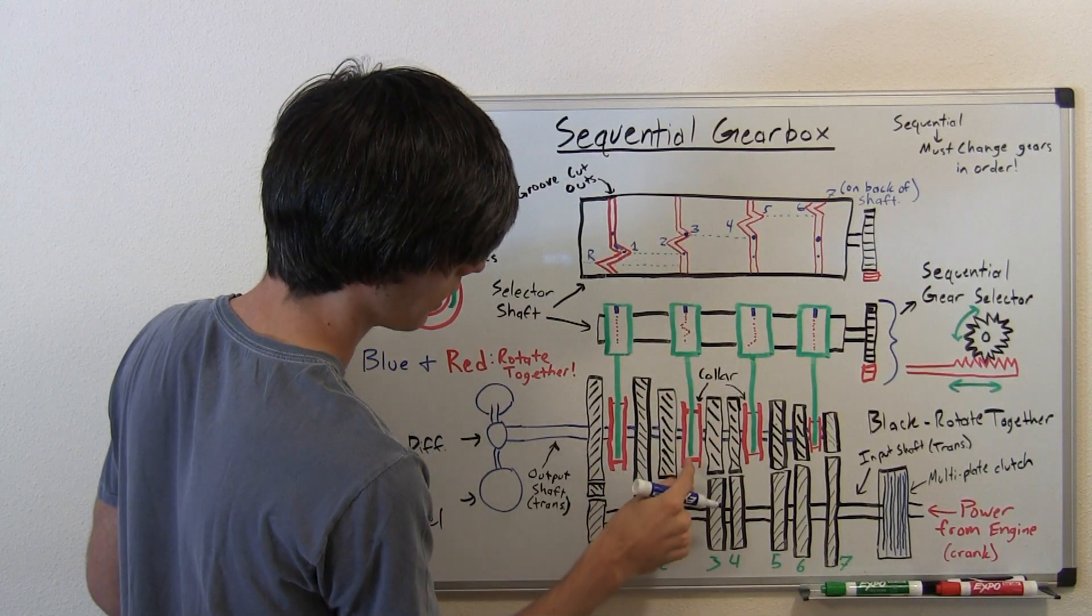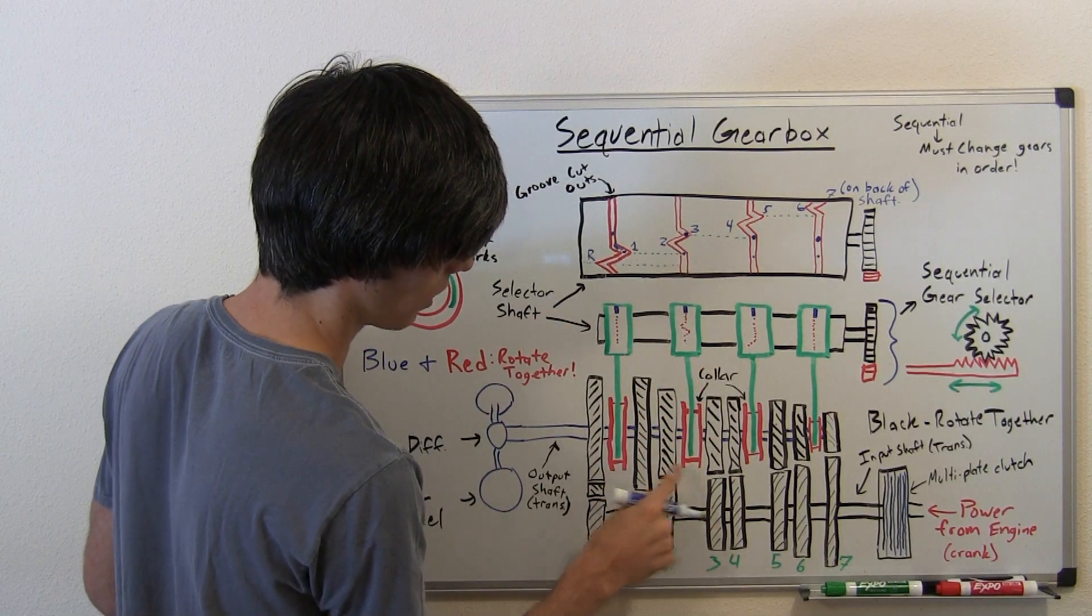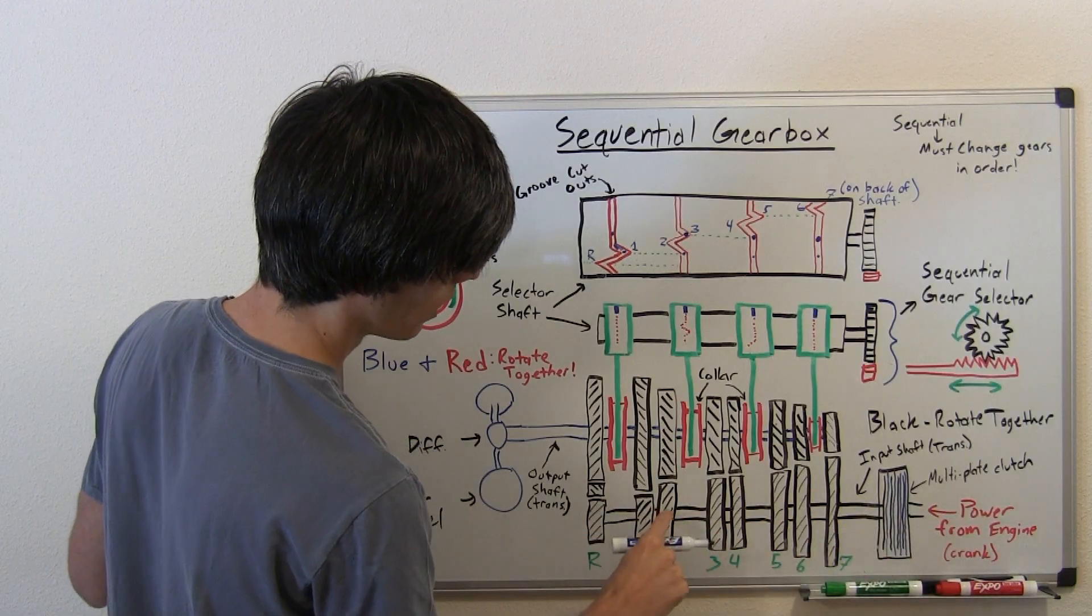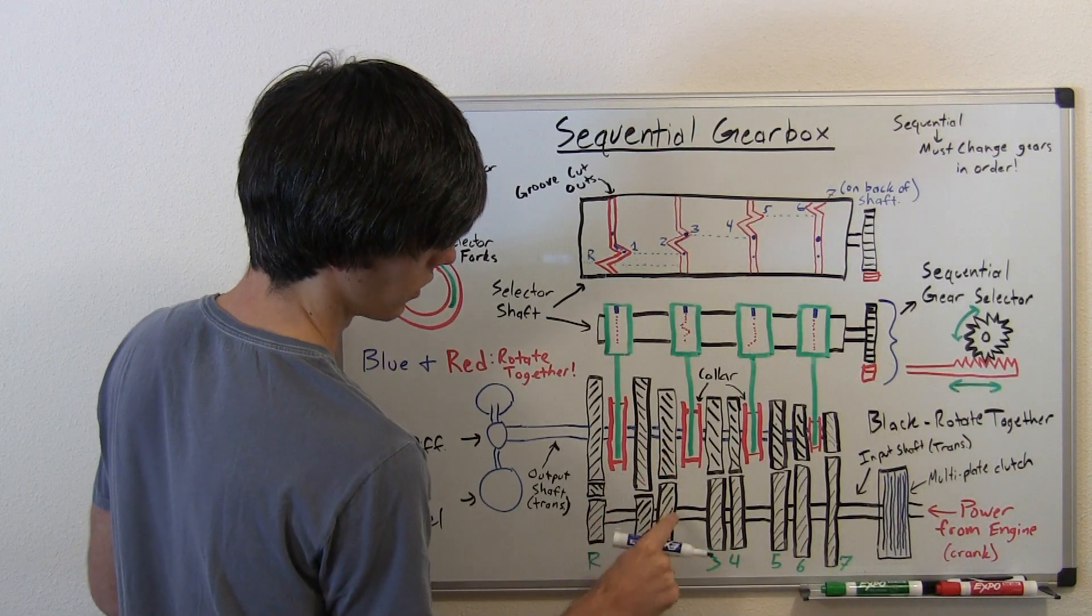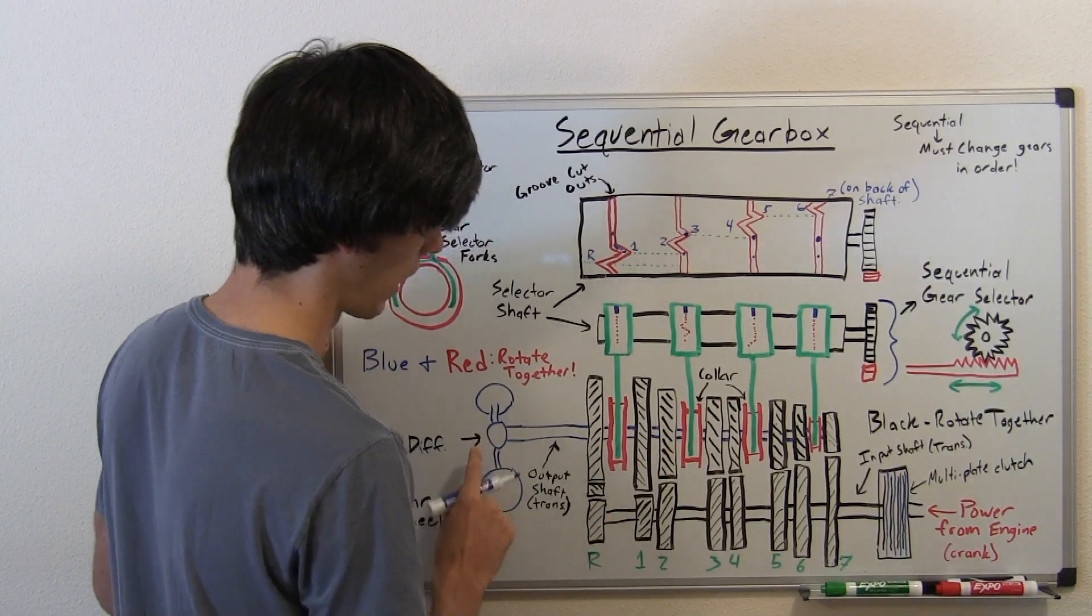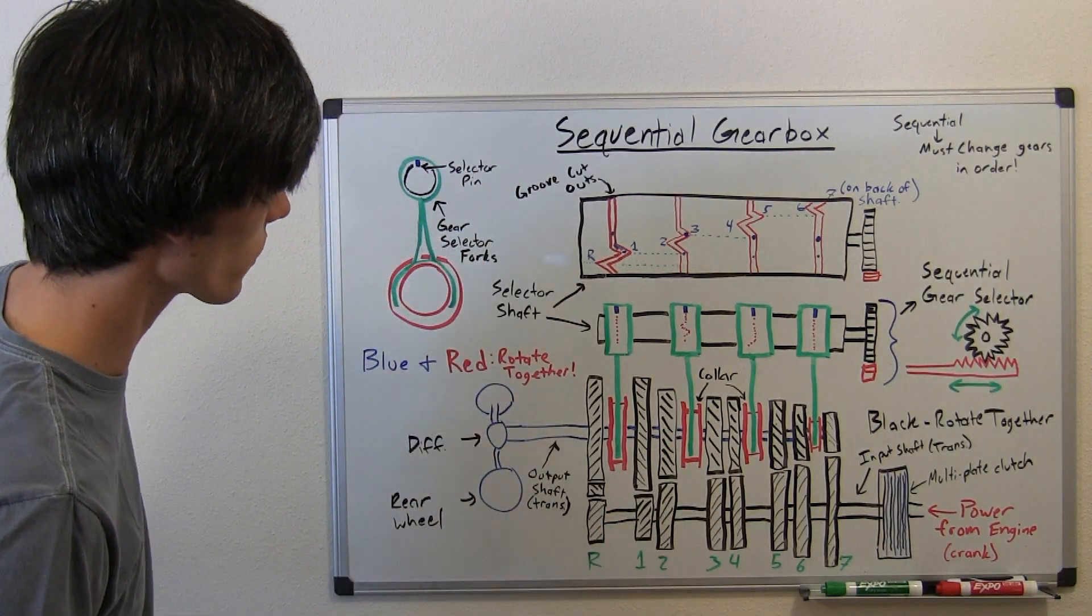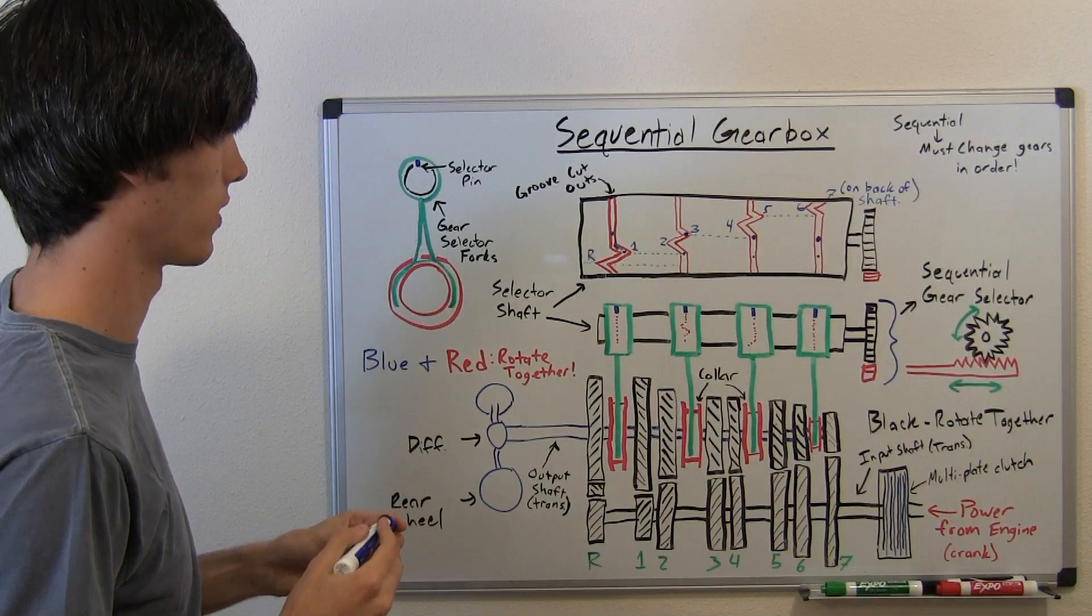So it's going to force this selector fork over and mesh this collar with this gear. So now you're transferring power from this shaft to this gear, to this gear, to this collar, and out to the differential. So that's how the gear selecting works.